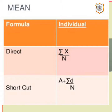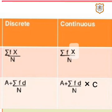The second method is the shortcut method. It is used when an assumed mean is given in the question. The formula is: X-bar equals assumed mean plus Sigma D upon n, where A is the assumed mean, D is the deviation from the assumed mean, Sigma D is the sum of deviations, and n is the total number of observations.